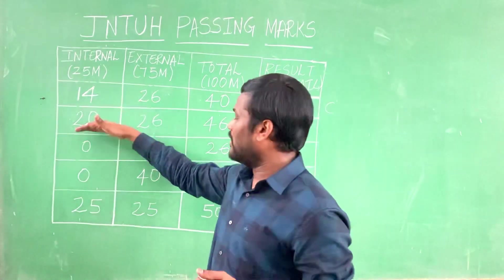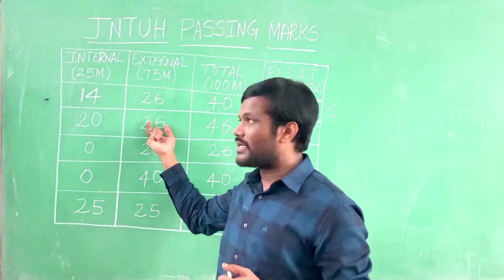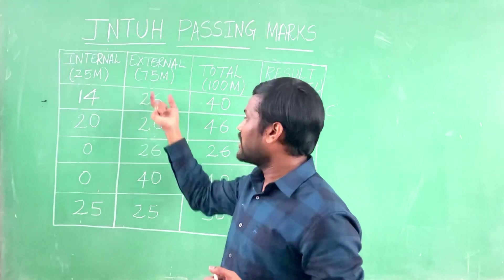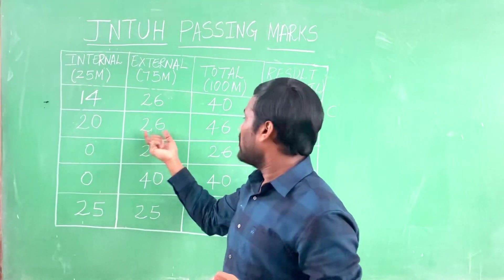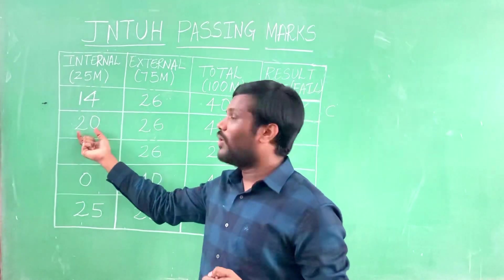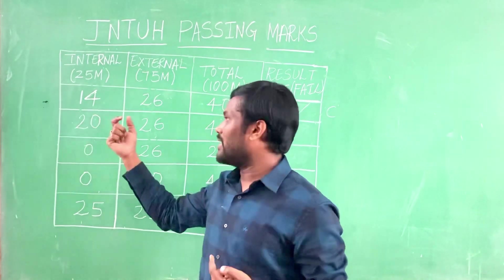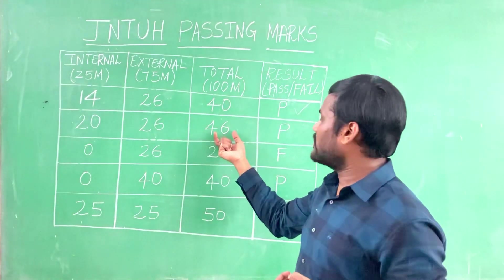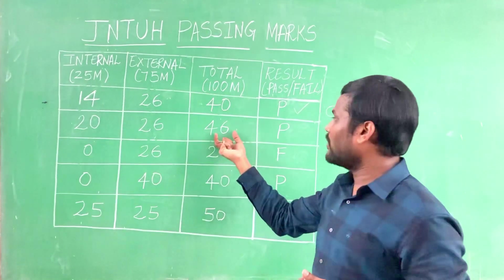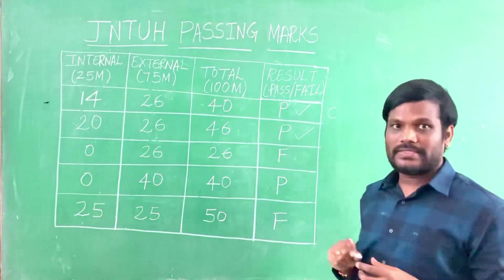Now let us take the second case. A student secured 26 marks in the external, which clears the 35%. But in order to get 40 marks, he got 20 marks in the internal, which is greater than 14. No worries — he is passed here also. Because when you sum up, it is greater than 46, so the result is also pass.